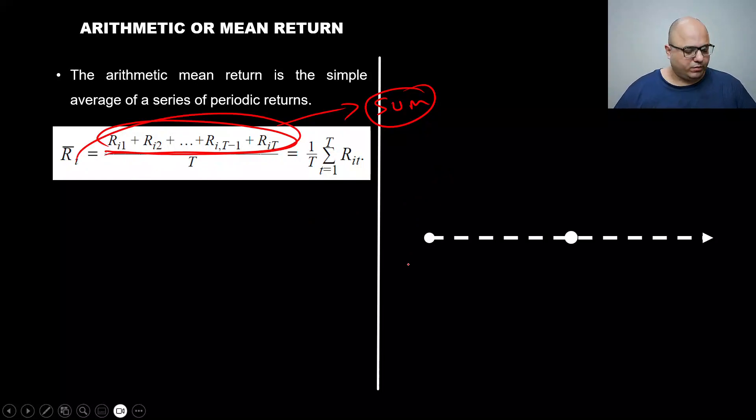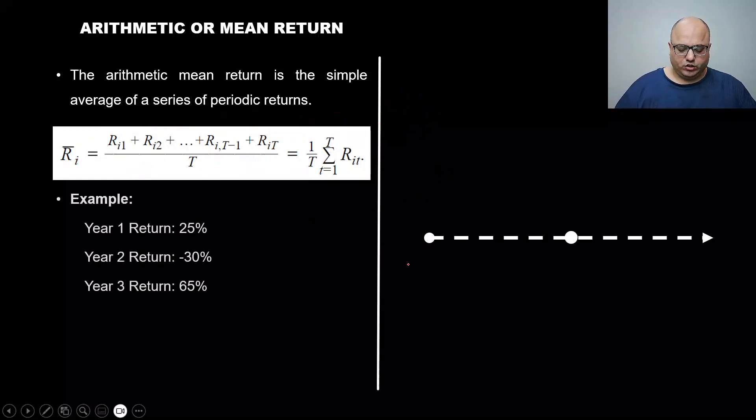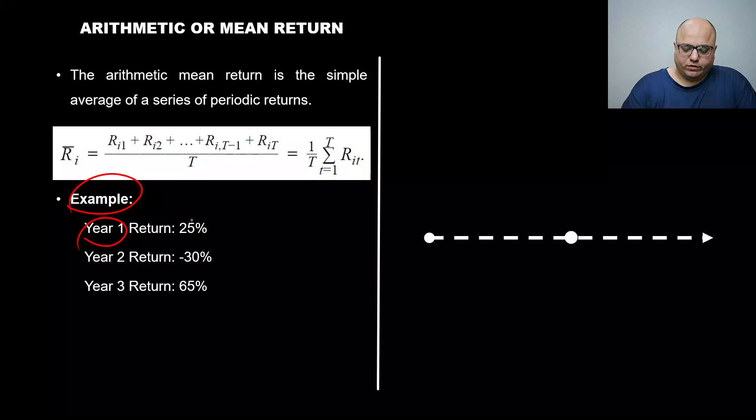Let's take a look at an example so you can see clearly. Let's say we're seeing this example where first year's return was 25%. By the way, we're talking about stock returns, portfolio returns, whatever, it doesn't matter. At the end of Year 1, 25% return. Year 2, 30% loss, you see the negative sign.